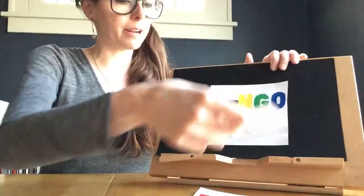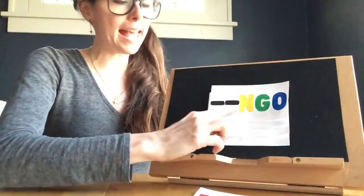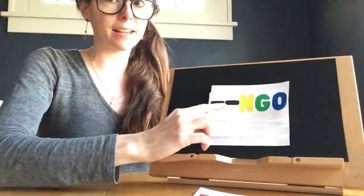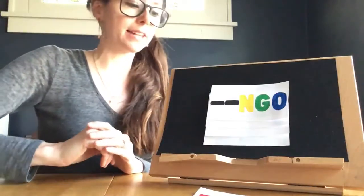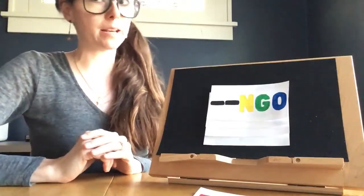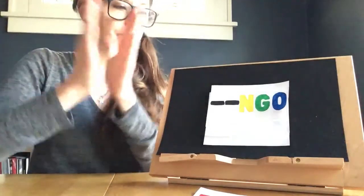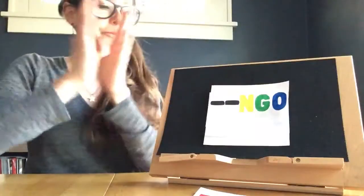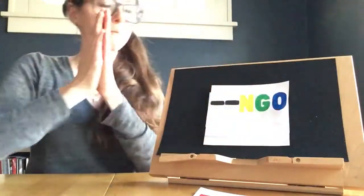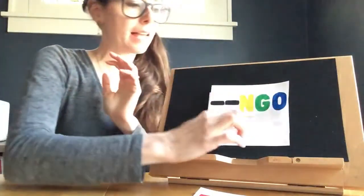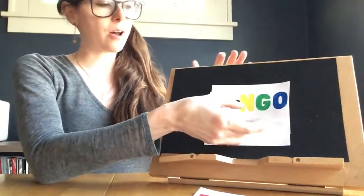Okay, we're going to get rid of the B and I. There was a farmer, had a dog, and bingo was his name-o. B-I-N-G-O. And G-O. And G-O. And G-O. And bingo was his name-o.